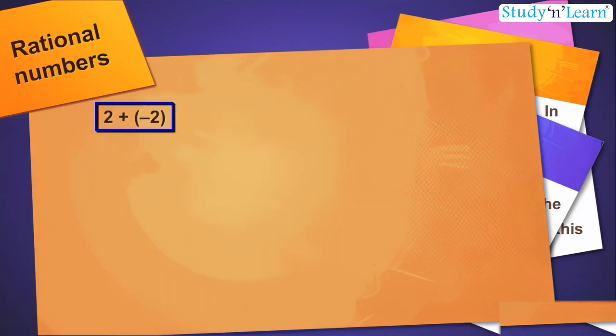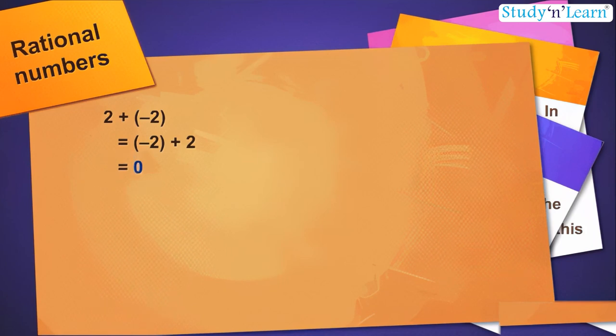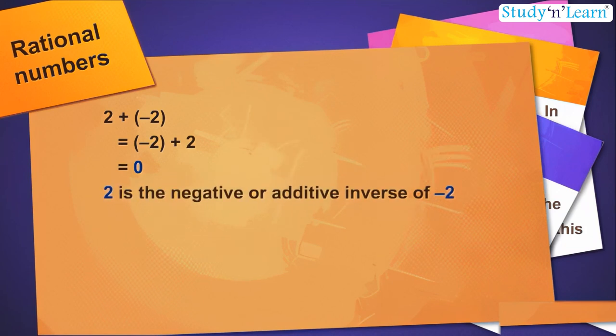Also, 2 plus minus 2 is equal to minus 2 plus 2 is equal to 0. So we say 2 is the negative or additive inverse of minus 2 and vice versa.